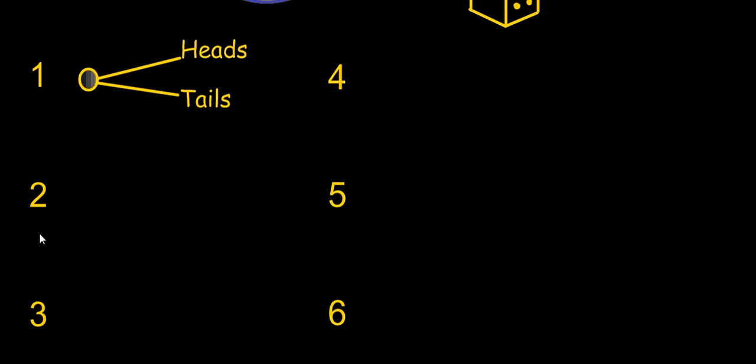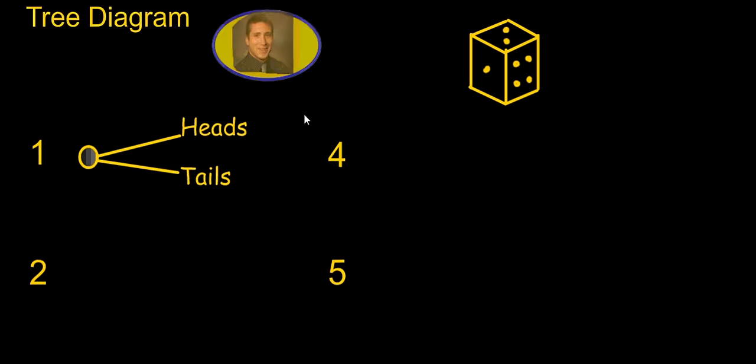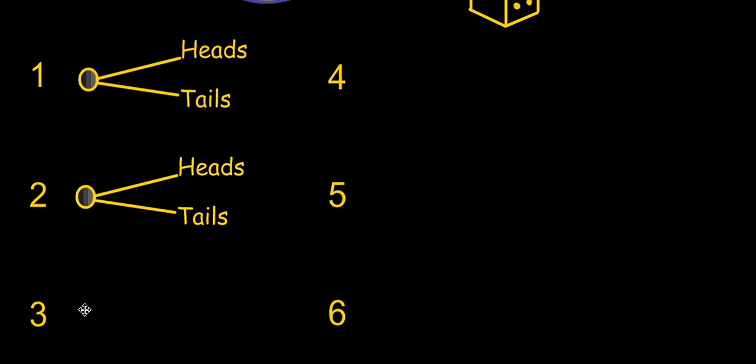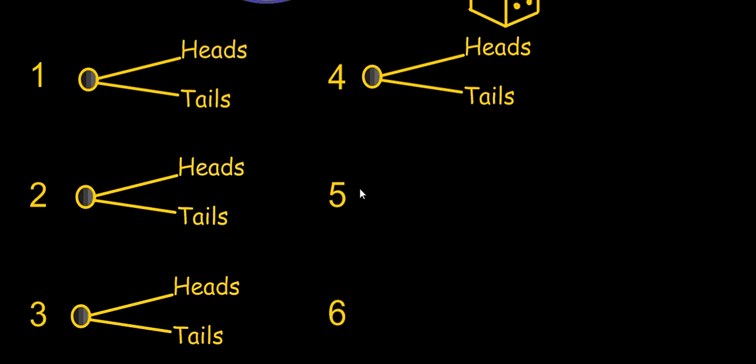either a 1, a 2, a 3, a 4, a 5, or a 6. And then for the coin flip, we can either have heads or tails. So heads or tails, heads or tails, and this is what a tree diagram is. We're putting all the possibilities by drawing them out in a sort of tree diagram.